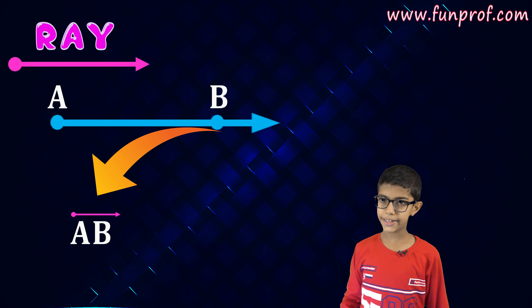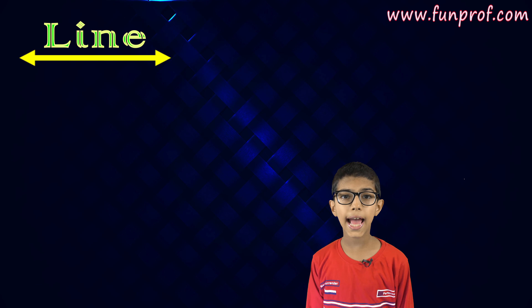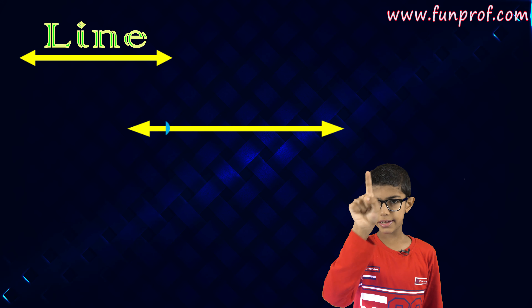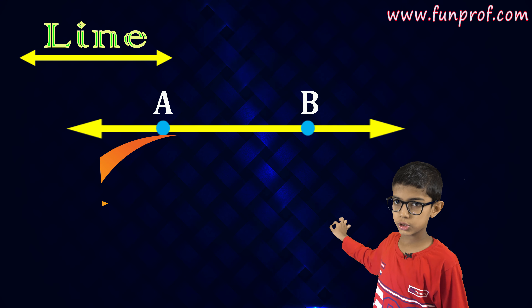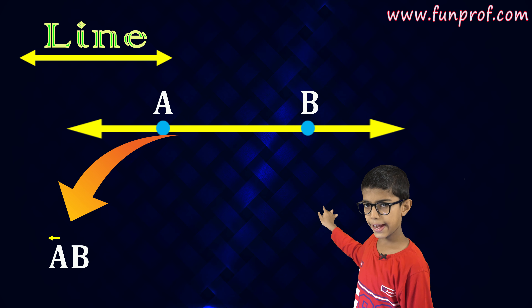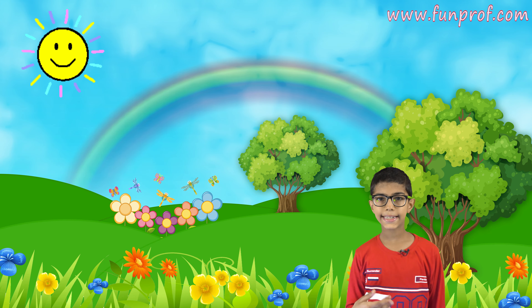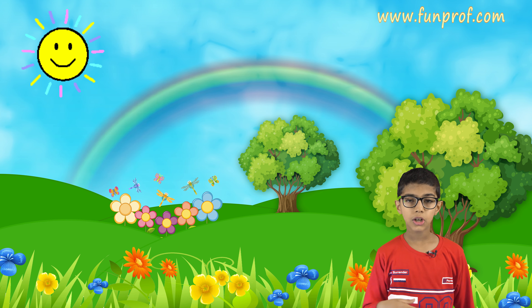If it's a line, AB — this line will go on and on — so AB with arrows on both sides. If it's a point, then just A.